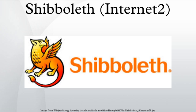Shibboleth's access control is performed by matching attributes applied by IDPs against rules defined by SPs. An attribute is any atom of information about a user, such as member of this community, Alice Smith, or licensed under contract A. User identity is considered an attribute and is only passed when explicitly required, which preserves user privacy.